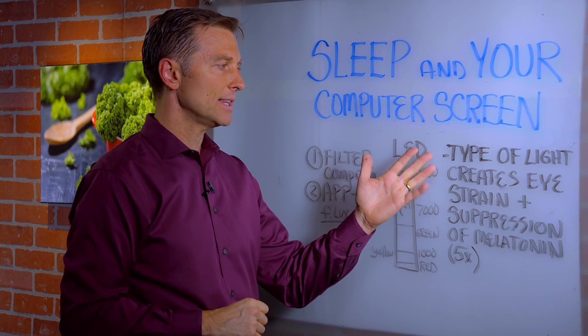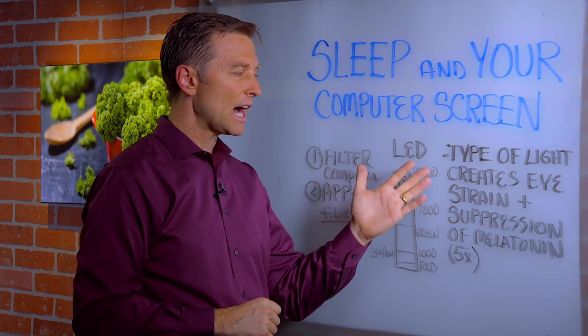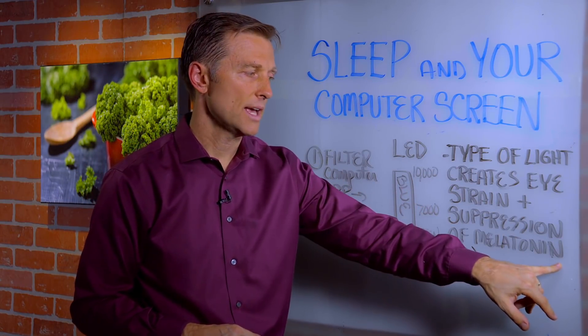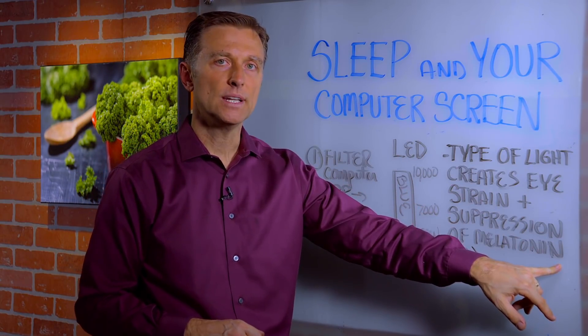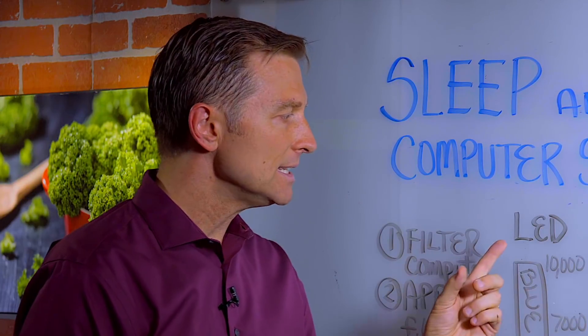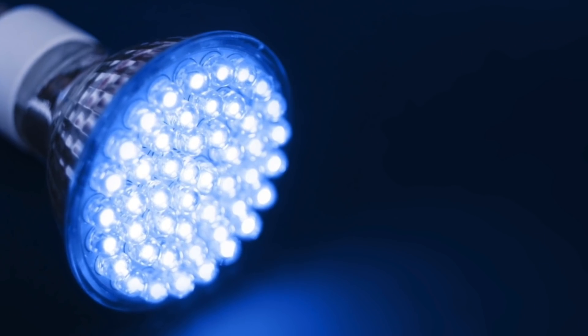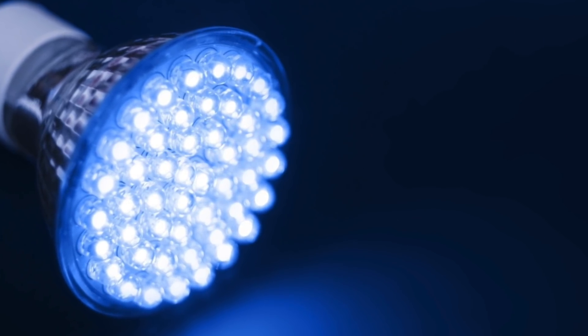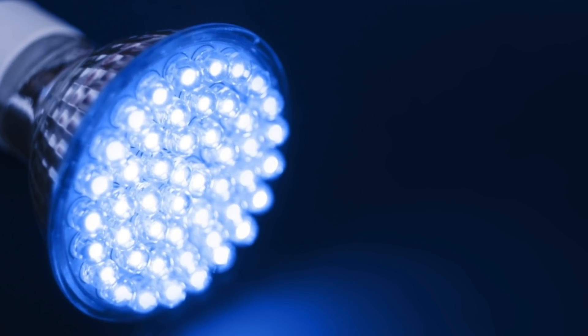It's a type of light that creates a lot of eye strain and suppression of a hormone called melatonin. Melatonin is the main sleeping hormone, and an LED light can suppress melatonin five times more than natural light. The main problem with LEDs is they emit way too much blue light.